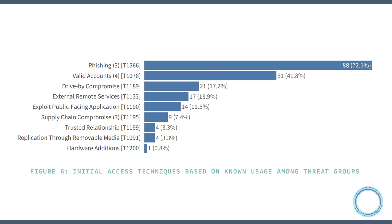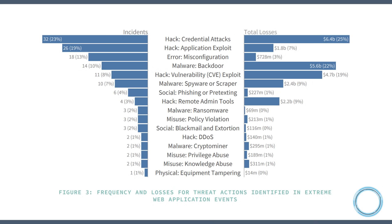Now this could mean that a small number of threat actors commit a large number of attacks, or it could point to difficulties in detection. The most common initial access technique for these exploits is phishing, which could explain the fact that 42% of attacks use valid user accounts often via web apps to gain initial access.